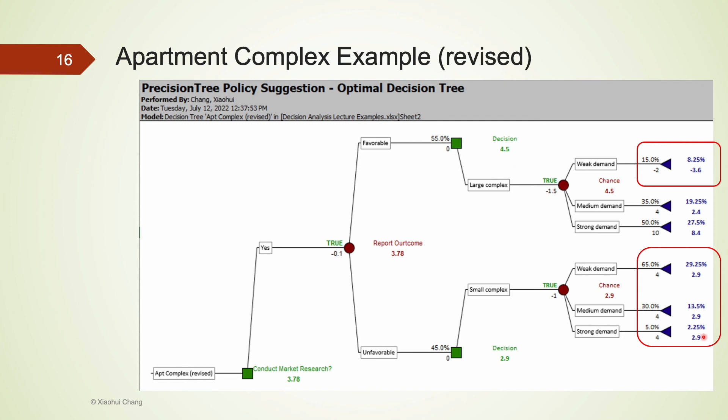The highest payoff the company could expect is $8.4 million with a probability of 27.5%. Please pause the video here and see if you can read the decision tree and find other payoff amounts and their associated probabilities.